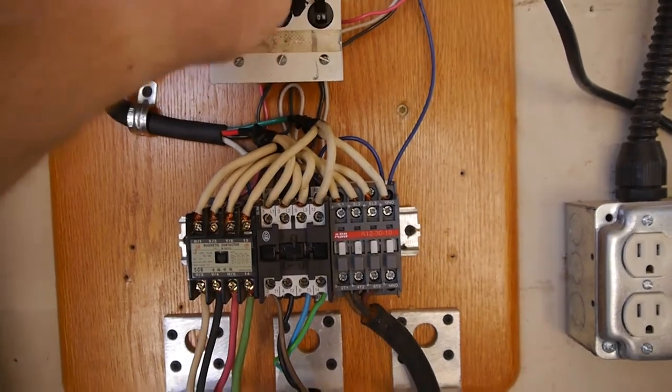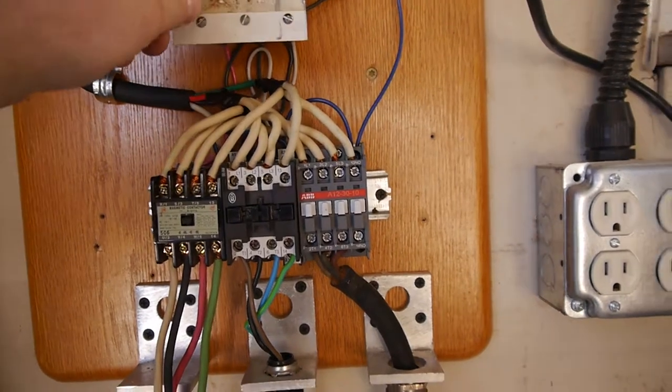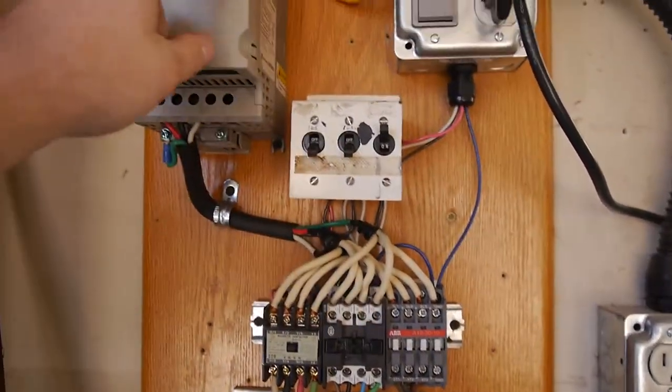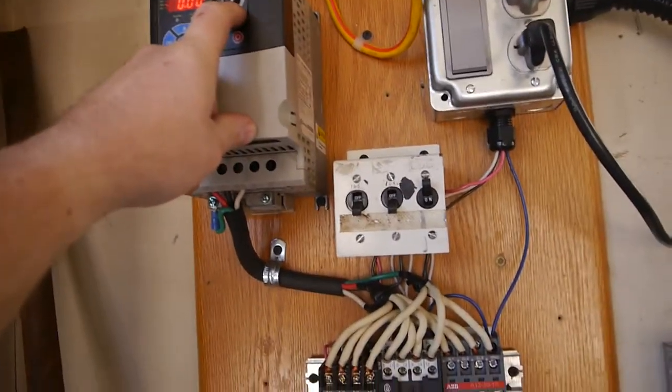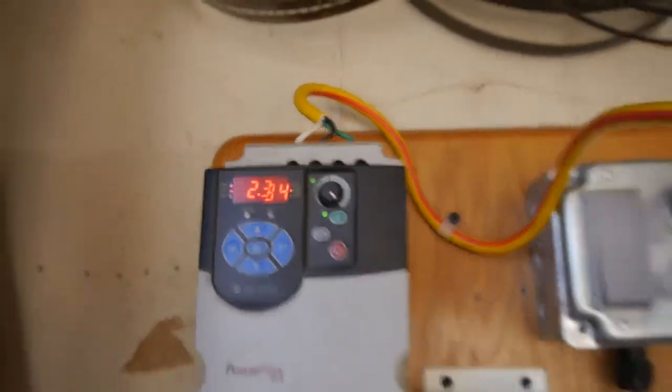So yeah, pretty simple, straightforward. But let's activate the drill press. And then I gotta do a better system than this, hitting the green button to make it go. But so yeah, I'm just drawing 2.35 amps. Not running too bad. Yeah, so that's how you do it.